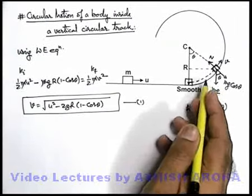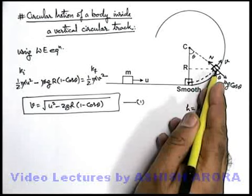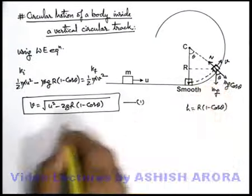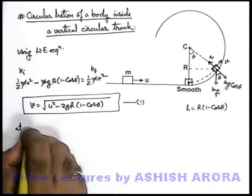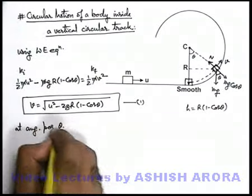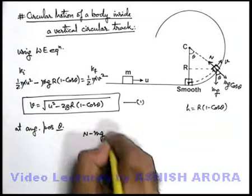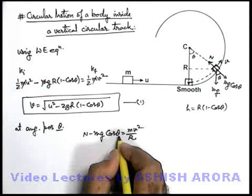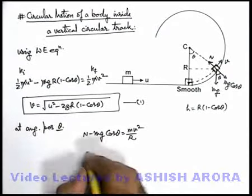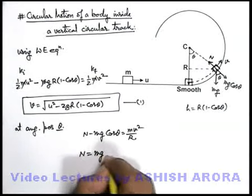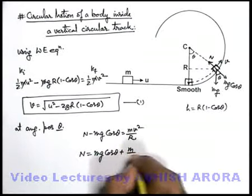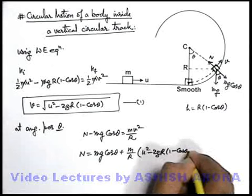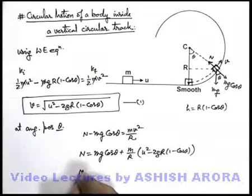At angular displacement θ from the bottom-most position of the track, we can write: N minus mg cosθ equals mv²/r, as it is the net centripetal force acting on the block. Substituting the value of speed, we get the value of N as mg cosθ plus (m/r)(u squared minus 2gr(1 − cosθ)). Simplifying this expression gives us the value of N.